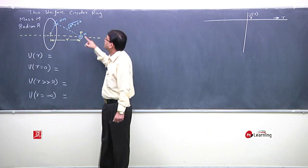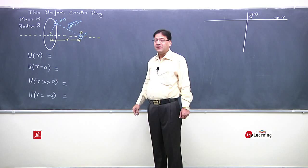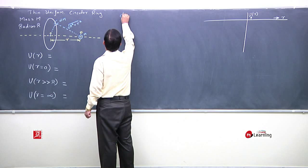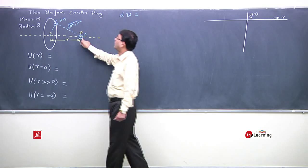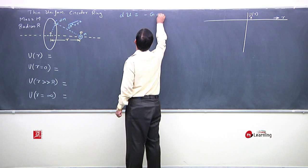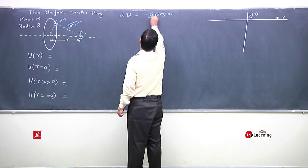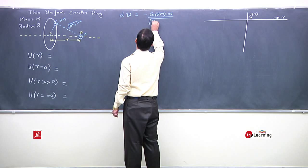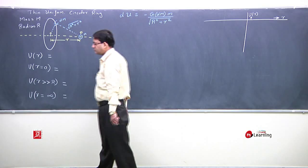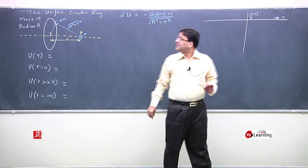It would form a right-angled triangle, this would be hypotenuse. Now we will say differential potential energy due to this differential mass dm is minus G dm into m by its distance that is under root of r square plus R square.